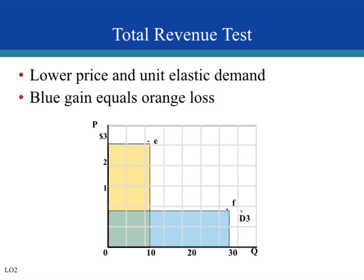For unit elastic demand, total revenue does not change. A percentage change in price causes quantity demanded to change by the same percentage, so total revenue stays the same — the output effect and the price effect are equal. Whether price is at $3 or $1, total revenue will not change. At $3 they sell 10 units — that's $30. At $1 they sell 30 units — again, total revenue is $30.